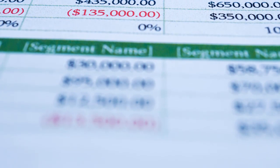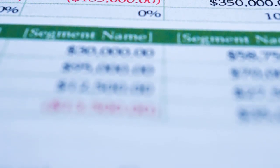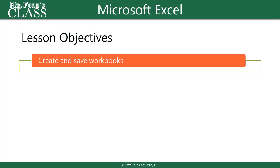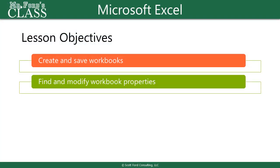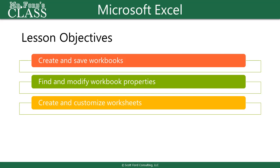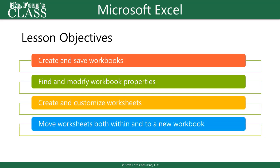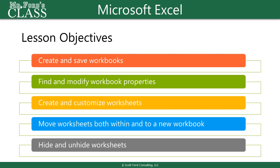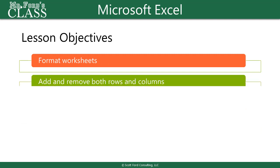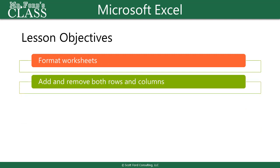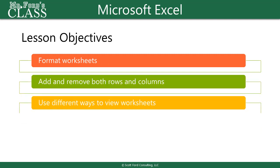Let's take a look first at our lesson objectives for Unit 2: create and save workbooks, find and modify workbook properties, create and customize worksheets, move worksheets both within and to a new workbook, hide and unhide worksheets, format worksheets, add and remove both rows and columns, and finally use different ways to view worksheets.